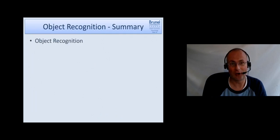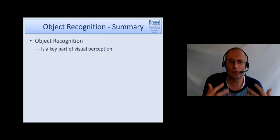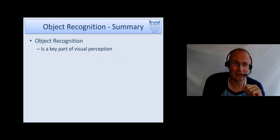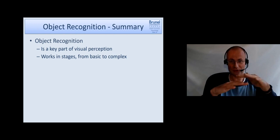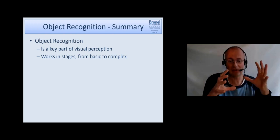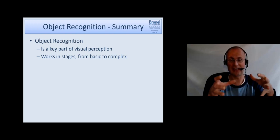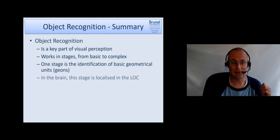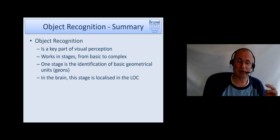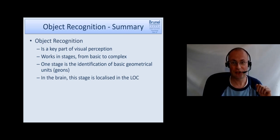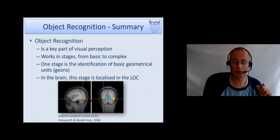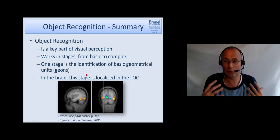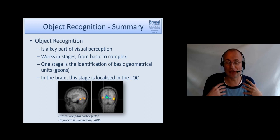Okay, so to summarize object recognition, it's really a key part of visual perception. It works in stages. So we start very basic with edge detection, but then quickly try to form these edges and so forth into basic geometric ions into geons. And to have that to work with this. MRI and imaging research has shown that this stage is actually localized in the lateral occipital cortex. So it was possible to identify even in the brain where these geometrical units, the geons are localized.